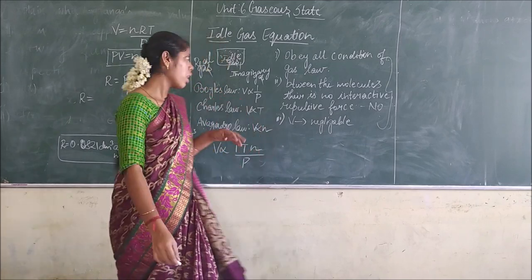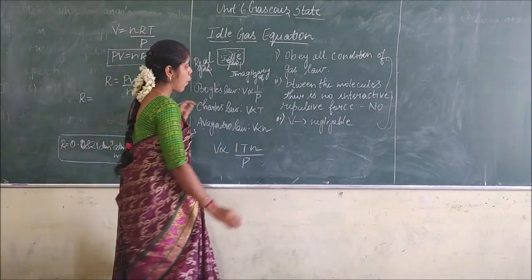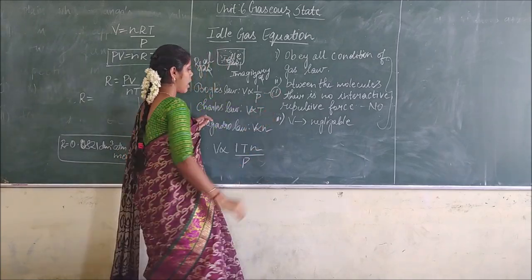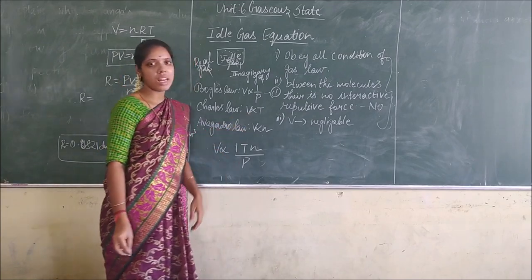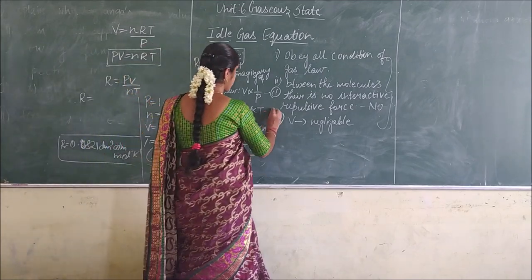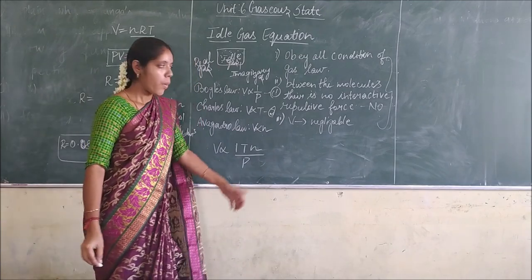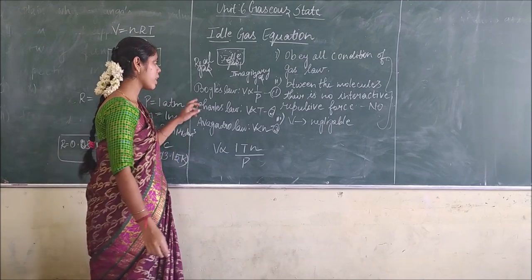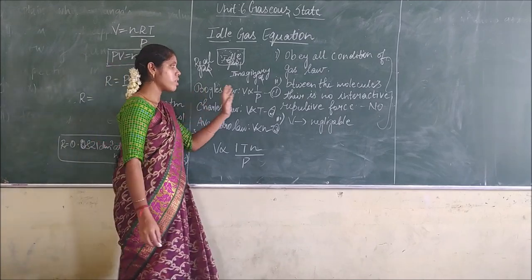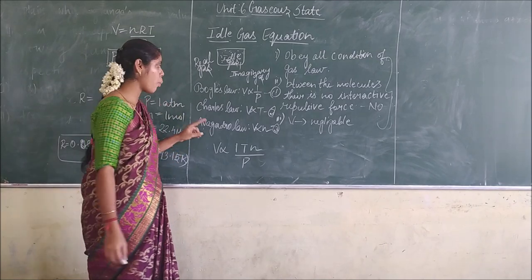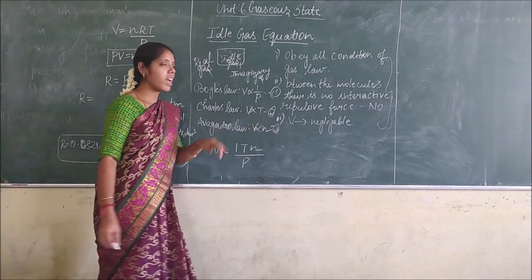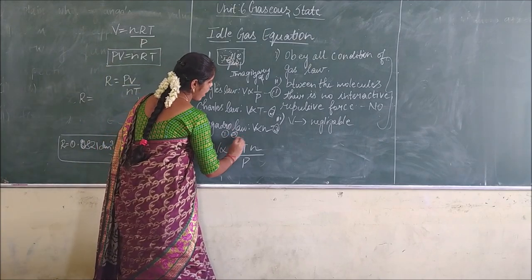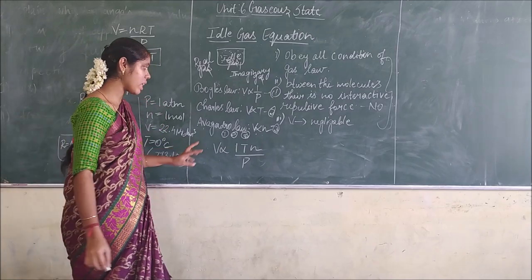We saw Boyle's Law, where volume is inversely proportional to pressure (Equation 1). Charles's Law, where volume is directly proportional to temperature (Equation 2). And Avogadro's Law, where volume is directly proportional to number of moles (Equation 3). We are going to compare these three equations.